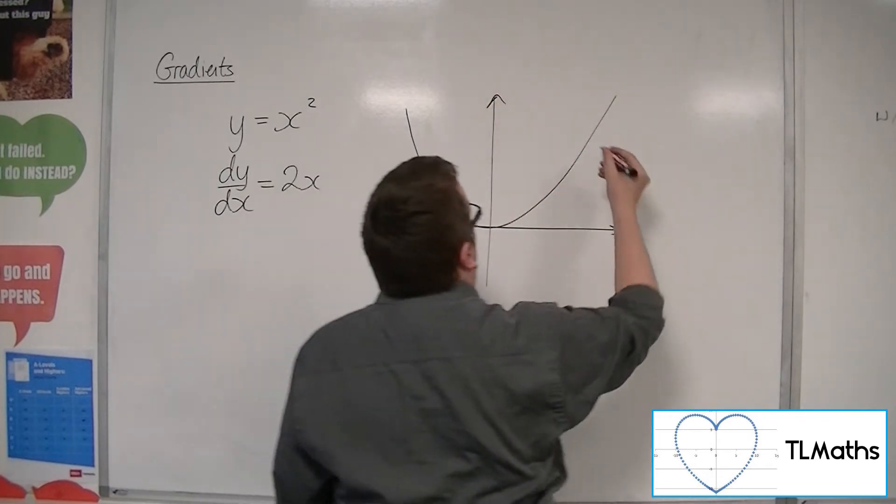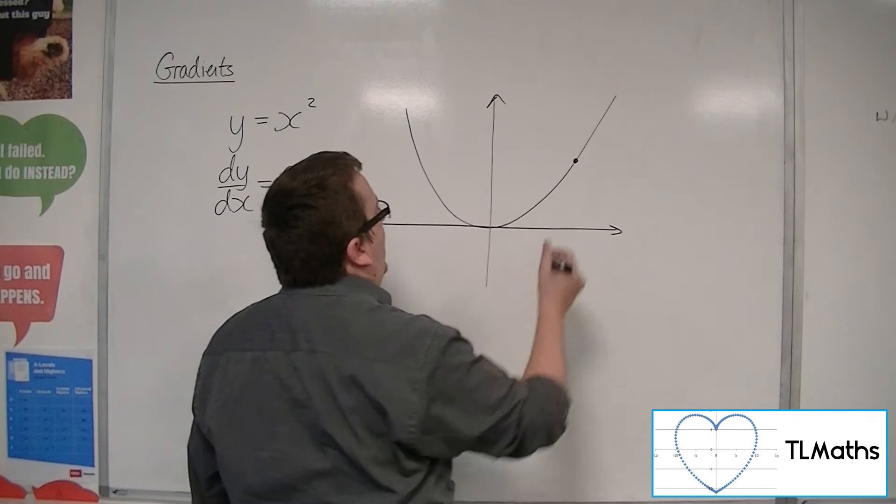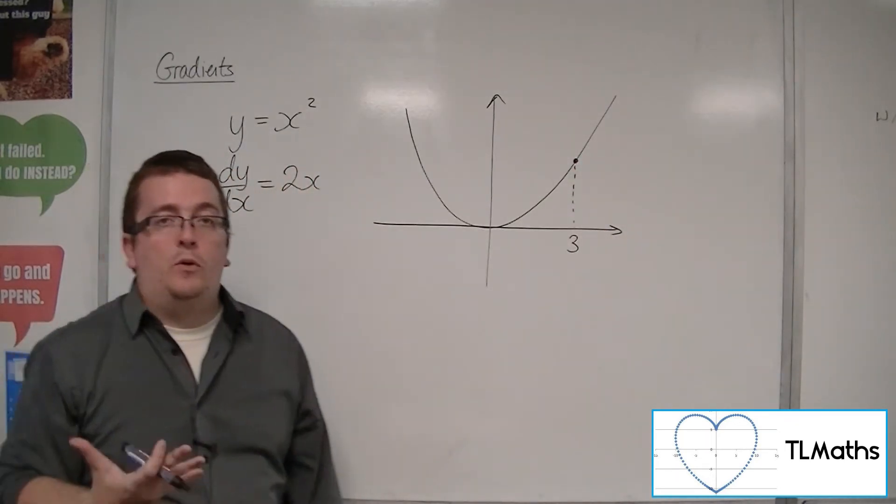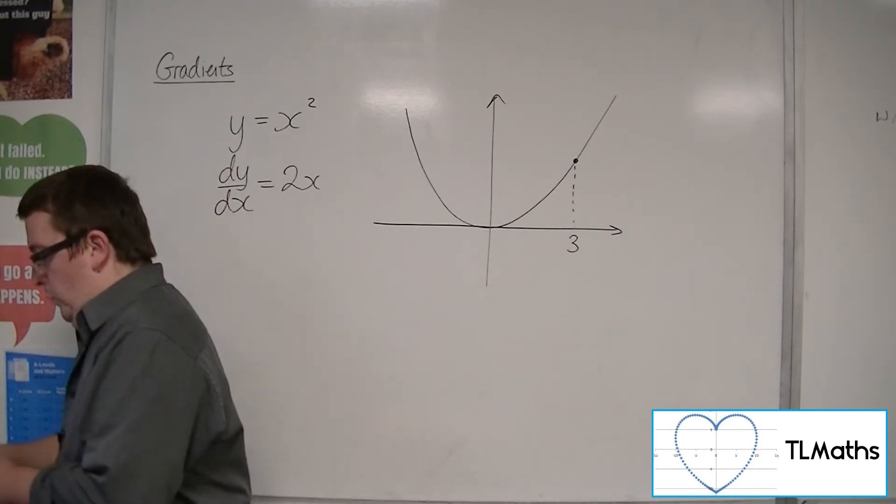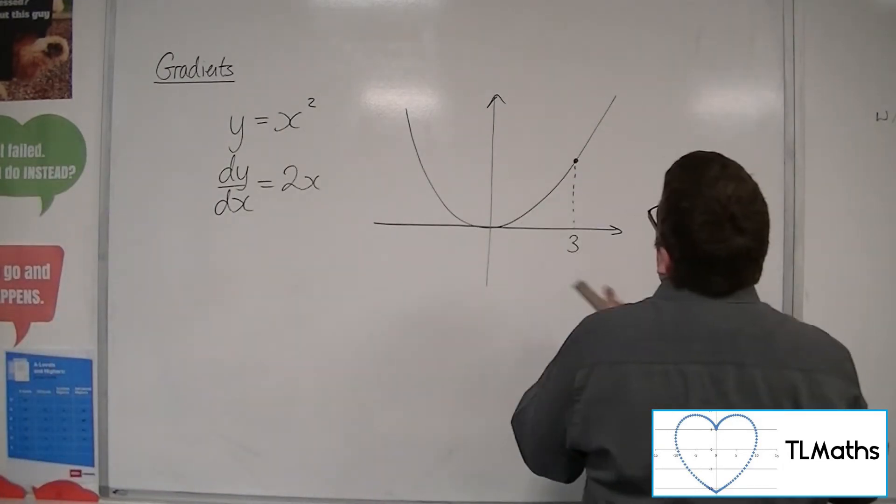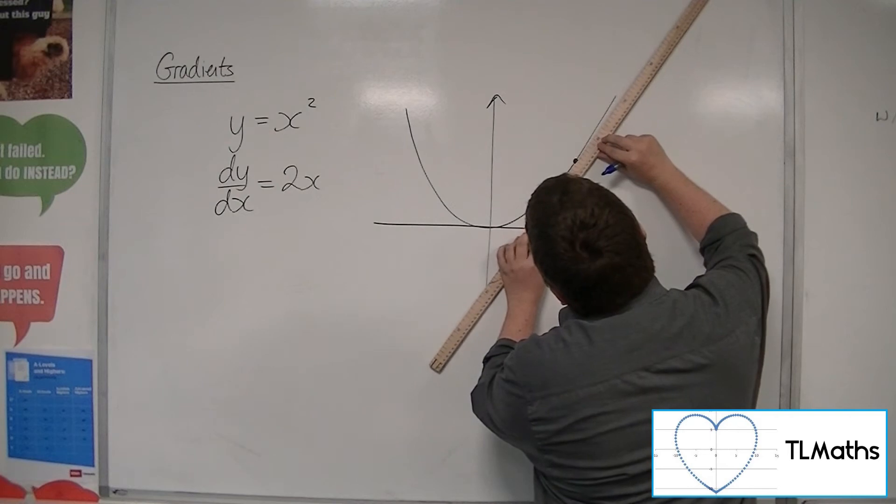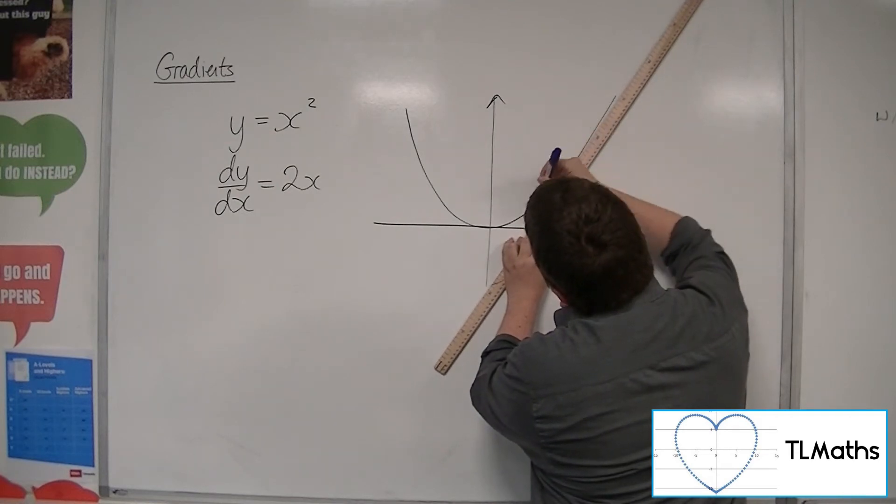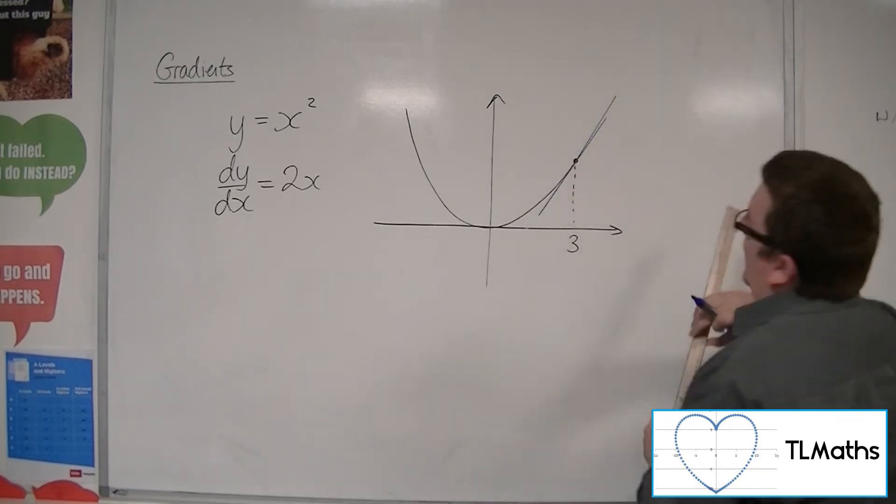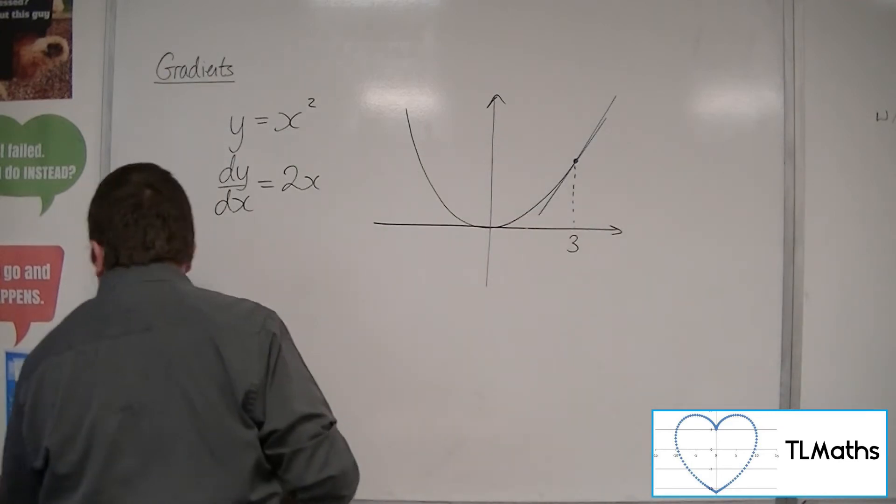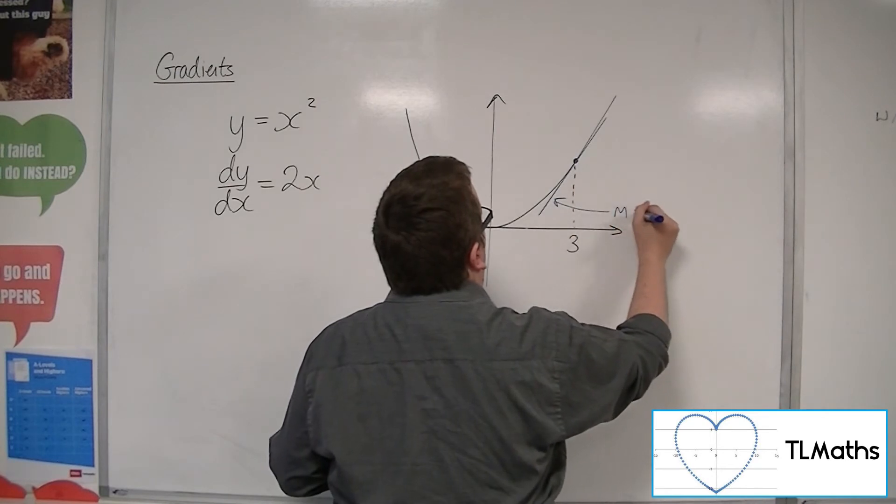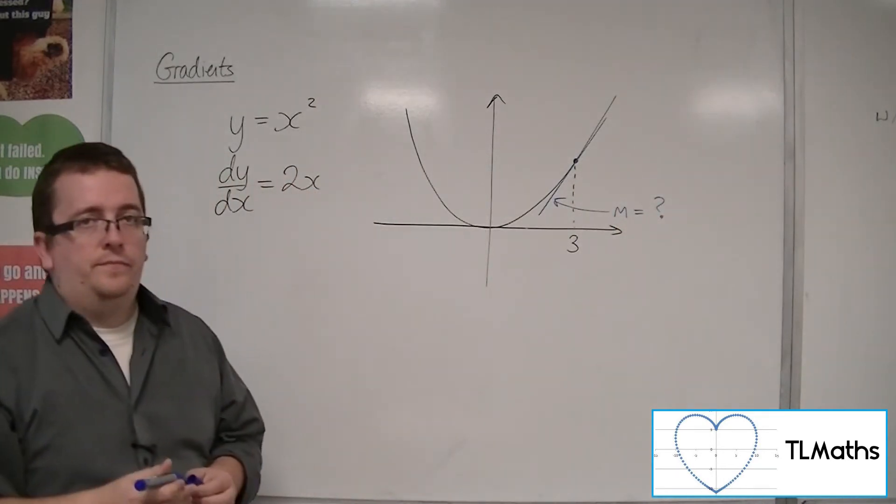And let's say I want to find the gradient of the curve at a particular point. So let's say I want to find the gradient of the curve at the point 3. Now, what's going to happen is what I'm asking is to find the gradient of the tangent line to the curve. So remember, a tangent line just brushes the curve at that point that I'm looking at. So I'm really asking what is the gradient of that tangent line?